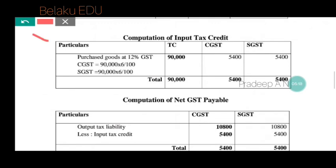Second step: calculate the input tax credit. Purchases of goods are rupees 90,000 at a GST rate of 12%. This 12% is split as CGST 6% and SGST 6%. So CGST = 90,000 × 6% = rupees 5,400 and SGST = 90,000 × 6% = rupees 5,400.